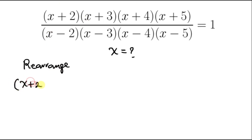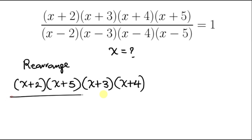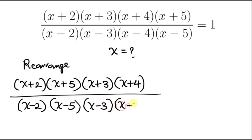On rearranging, we have (x+2) paired with (x+5), and (x+3) paired with (x+4) in the numerator. On the denominator, we arrange it the same way: (x-2) paired with (x-5), and (x-3) paired with (x-4). This is equal to 1.